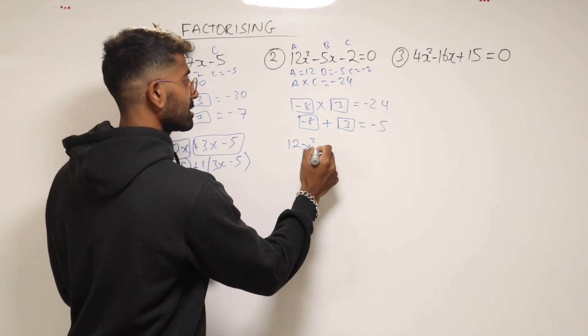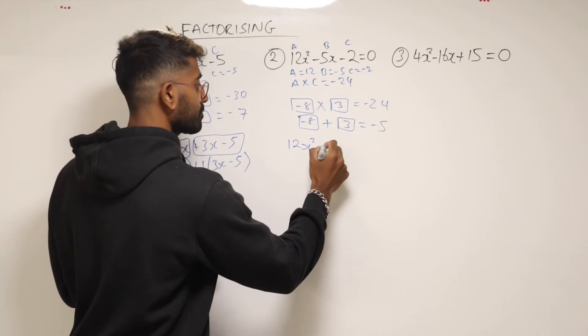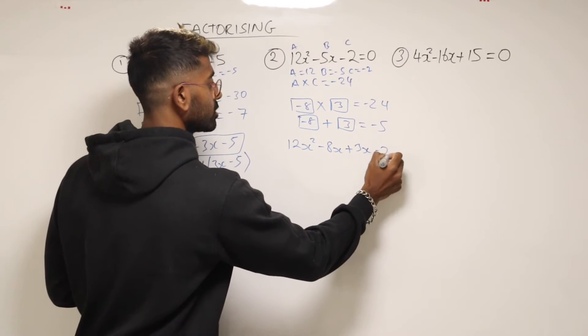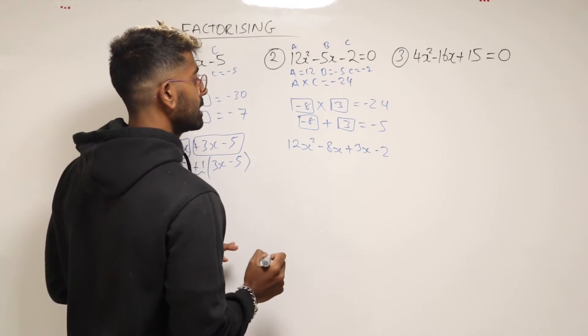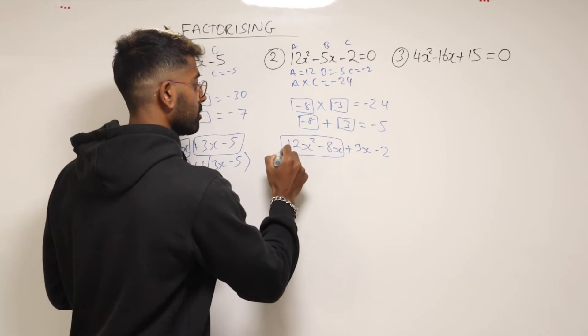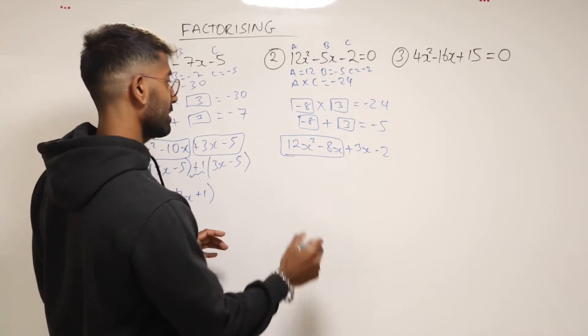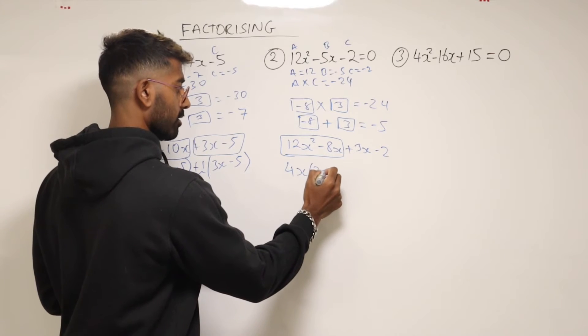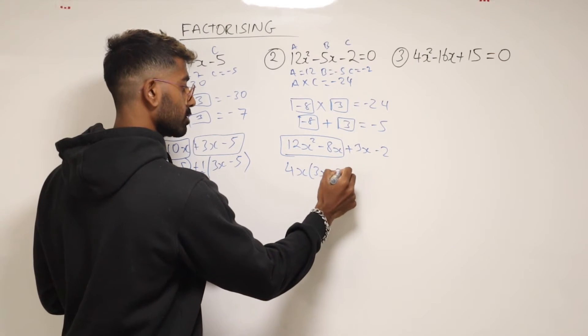So 12x squared. Now we start using these numbers. Minus 8x plus 3x, and then minus 2 on the end. Now factorize out the first two terms there. I think the most you can take out of there is 4x. So we'll have 3x minus 2.